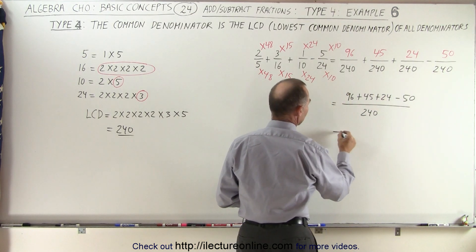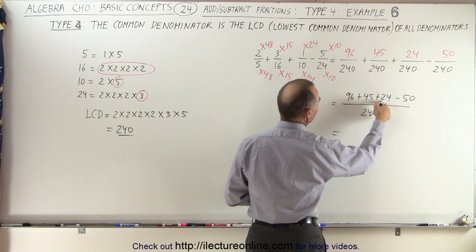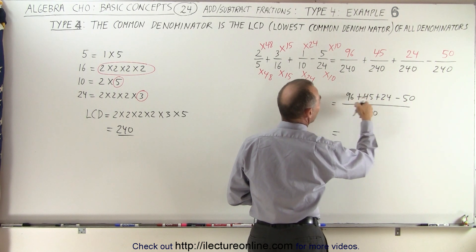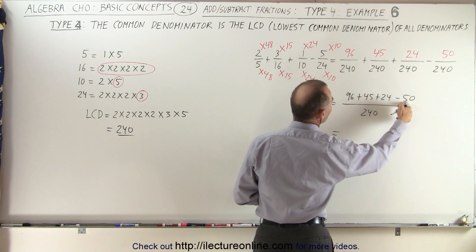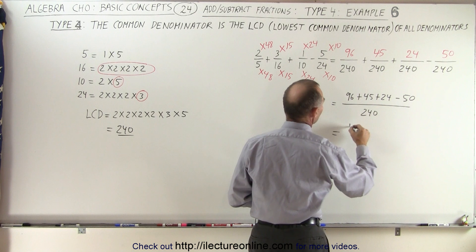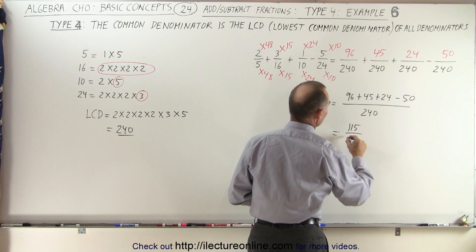With a common denominator of 240, we get 96 plus 45 plus 24 minus 50. Working that out: 96 plus 24 is 120, minus 50 is 70, plus 45 is 115. So we have 115 over 240.